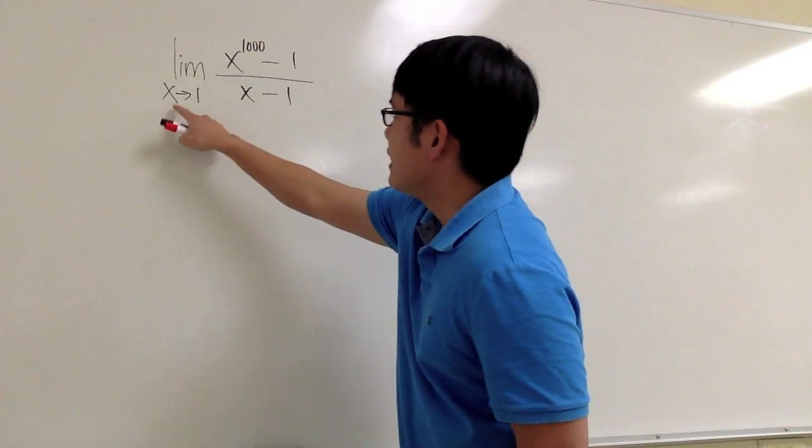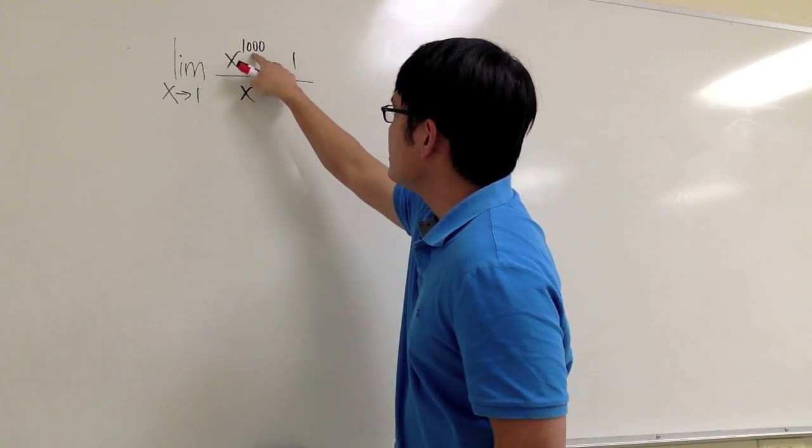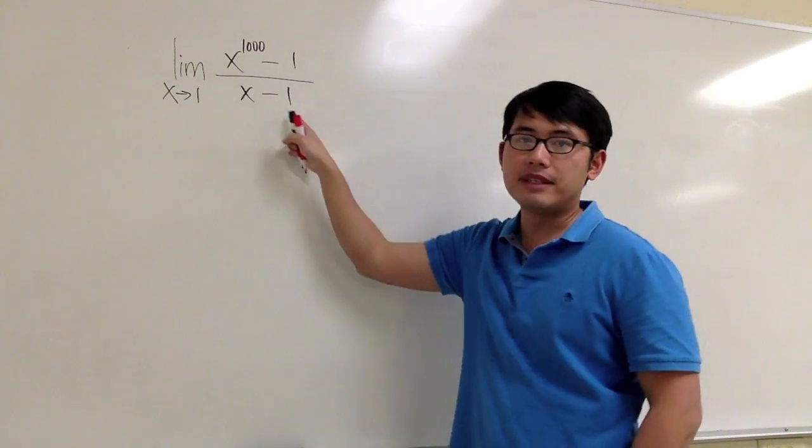Let's take a look at this limit. The limit as x goes to 1, x to the 1000 power, minus 1, over x minus 1.